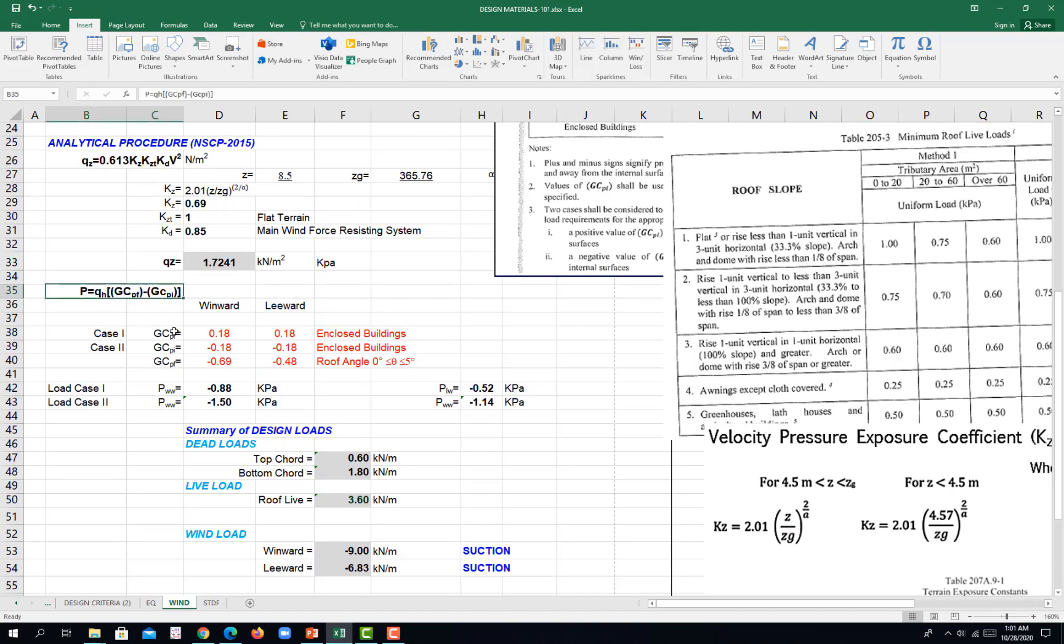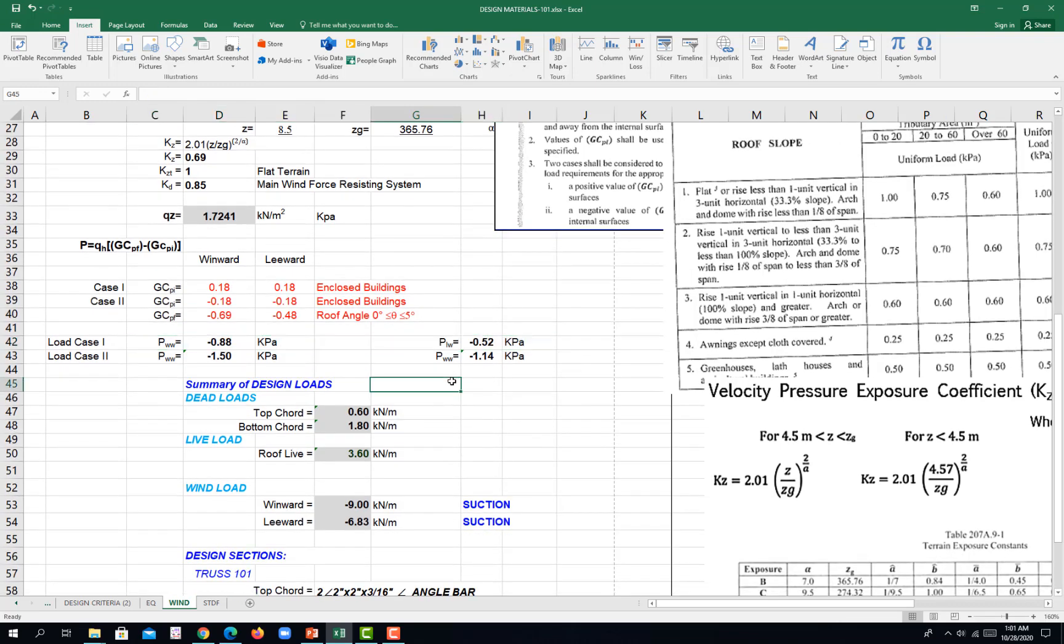So you come up with this formula. So under load case 1, this one plus this one, and then this value plus this value. So it will come up with these pressures in kilopascal.